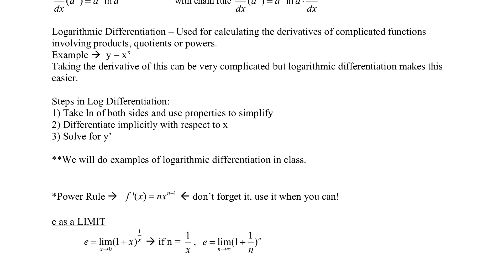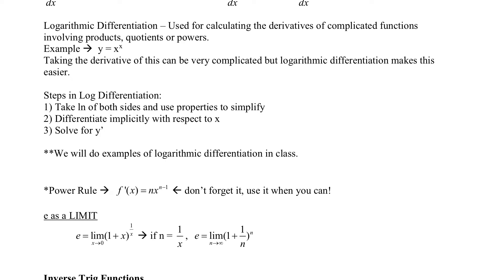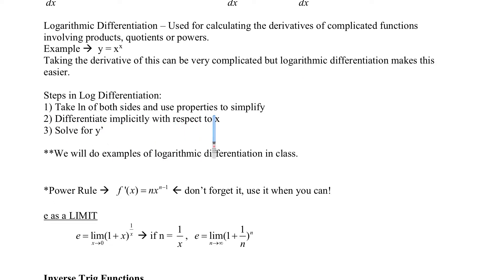Then we get into something called logarithmic differentiation. This is when things get really difficult — it's for calculating the derivative of complicated functions involving products, quotients, powers, etc. For example, x to the x is pretty difficult to differentiate, and that's when we use logarithmic differentiation. The steps are: take the natural log of both sides, use properties to simplify, differentiate implicitly with respect to x, and then solve for y prime. This is typically not covered on the AB test.